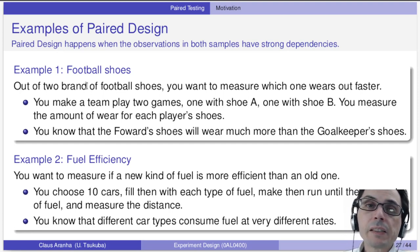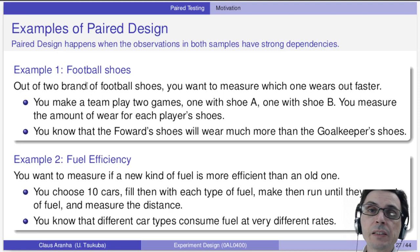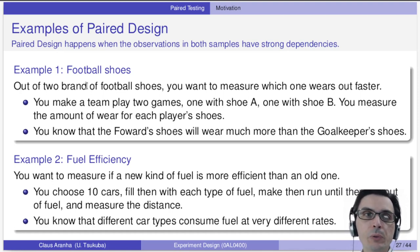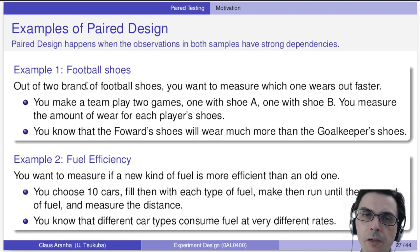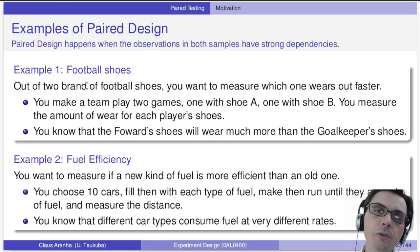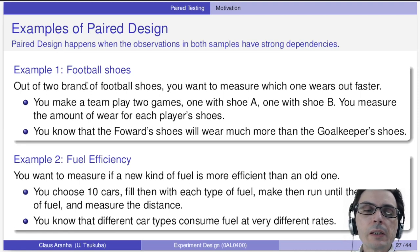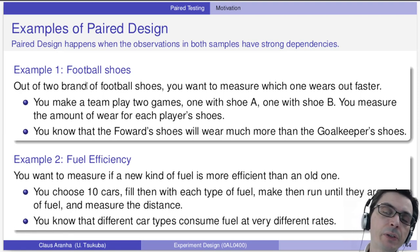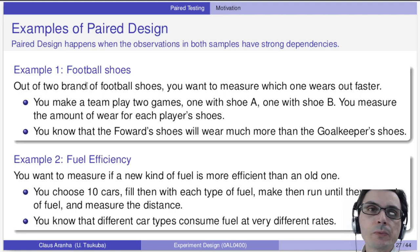Now a different experiment about fuel efficiency. Say you're developing a new type of fuel and want to see if it's more efficient than the old type. You choose ten cars, fill each with one type of fuel, run until the fuel runs out, and measure how far they went. You know that different cars consume fuel at very different rates — a small car might be more efficient, a large car less — so not all cars consume fuel at the same rate.